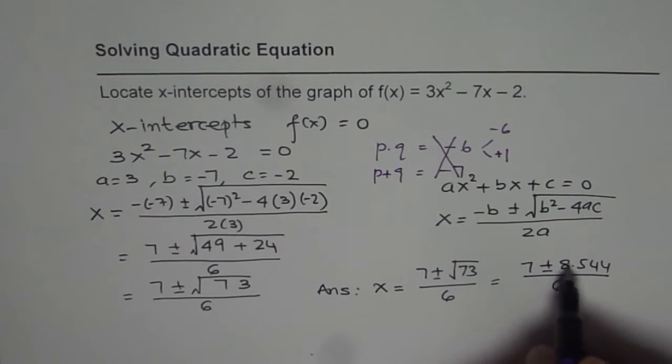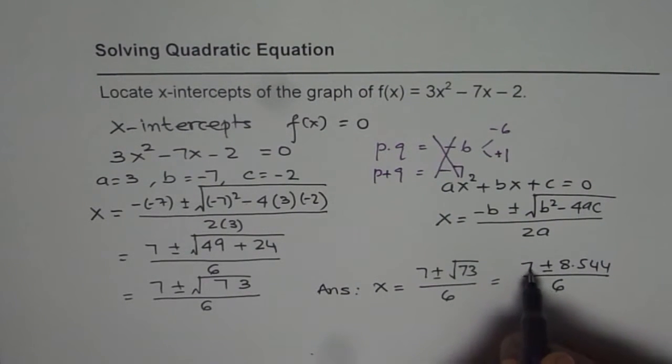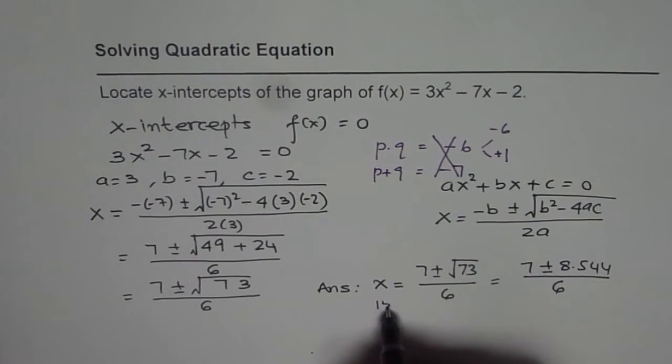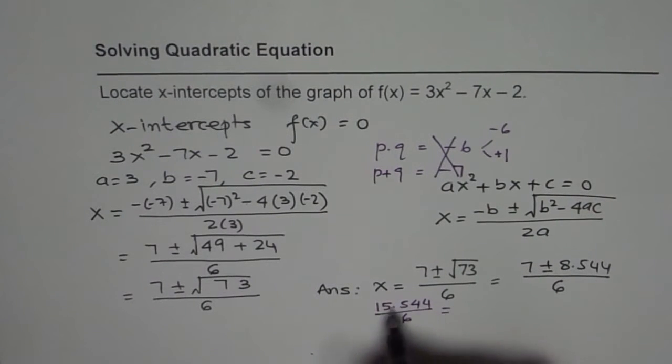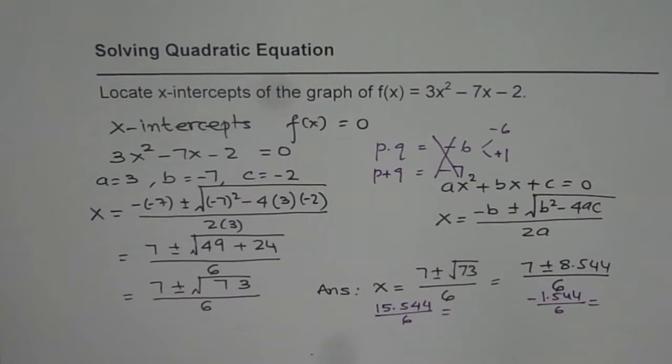We get two solutions here. If I write 7 plus 8, it is 15.544 divided by 6. If I use 7 minus, I get -1.544 divided by 6. We'll find these answers using calculator and round them to two decimal places.